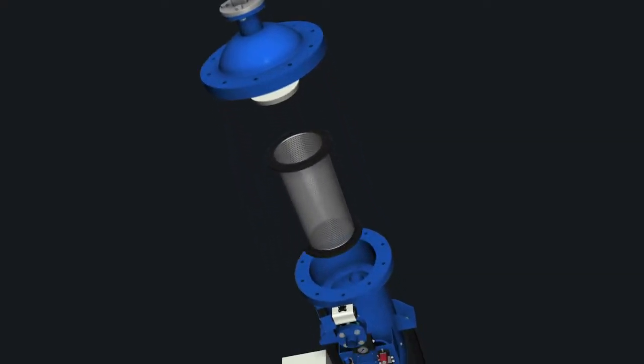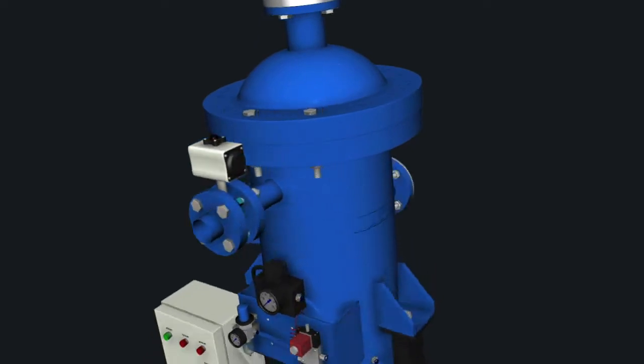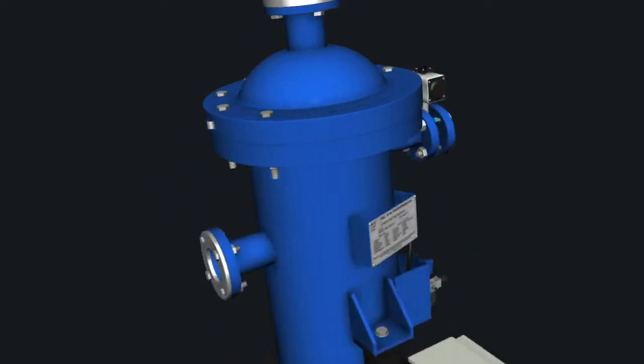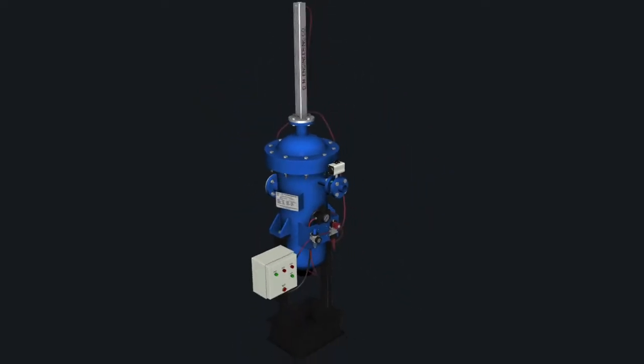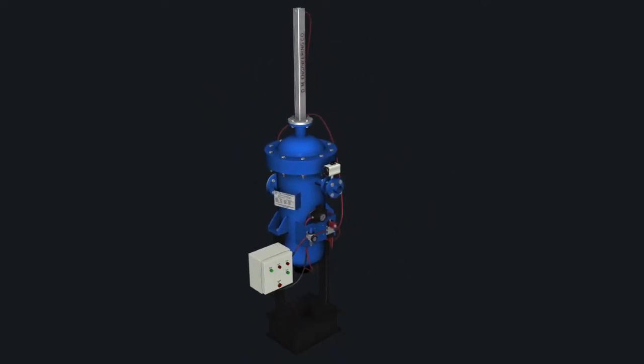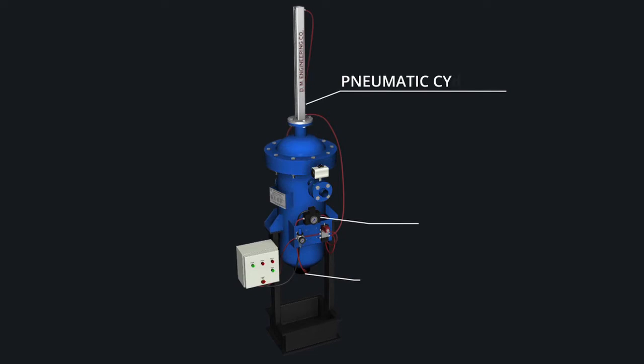DM Engineering is a pioneer of GRP FRP auto self-cleaning filters in India. Our design expertise with immense experience in GRP FRP filtration equipment enables us to offer a wide range of auto self-cleaning filters which are used in water desalination and many chemical process industries.